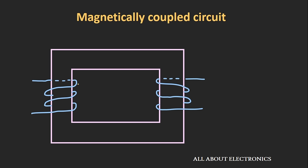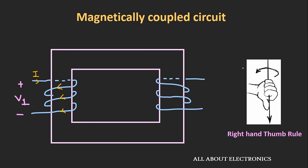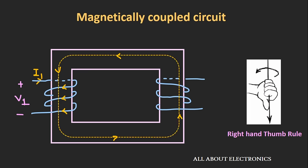The first winding has been wound from right to left, while the second winding has been wound from left to right. When we apply voltage to coil number 1, current I flows through it. Using the right-hand thumb rule, we can find the direction of the flux — as the current is flowing in this direction, the flux will flow in the downward direction. Let's call this flux Φ1.